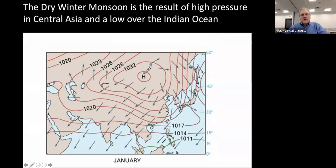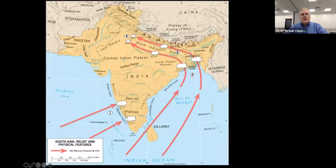As a consequence, there is some rain that does occur during the winter as well. In the summer, the winds are hitting the area of the Western Ghats, but it also goes right on up the Ganges River basin, and that brings a lot of moisture up into that area and especially into Bangladesh.